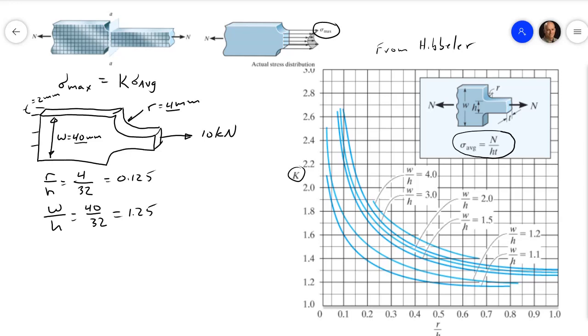And the way this works is you look up this value, so we're at 1.125, which is right here, and I'm going to go up to a value of 1.25. So this is the 1.1 line, the 1.2 line, and the 1.5. So we are right about here. If we extend this over, here is our K equals 1.75.